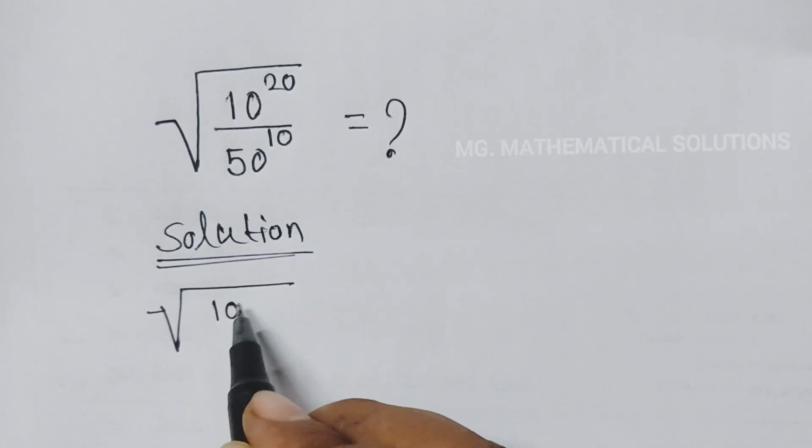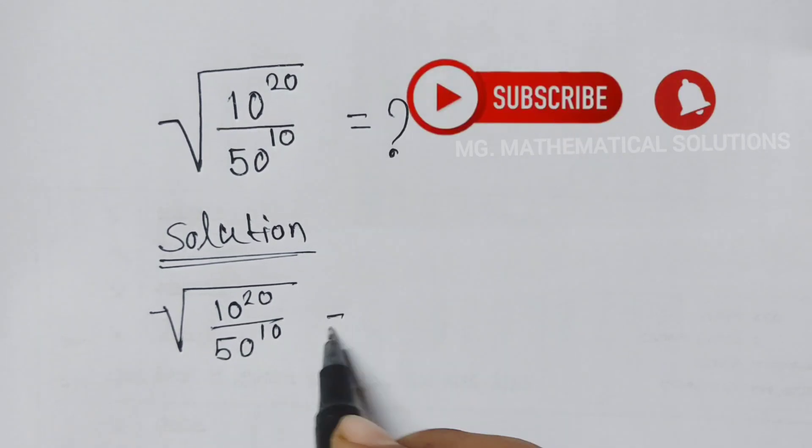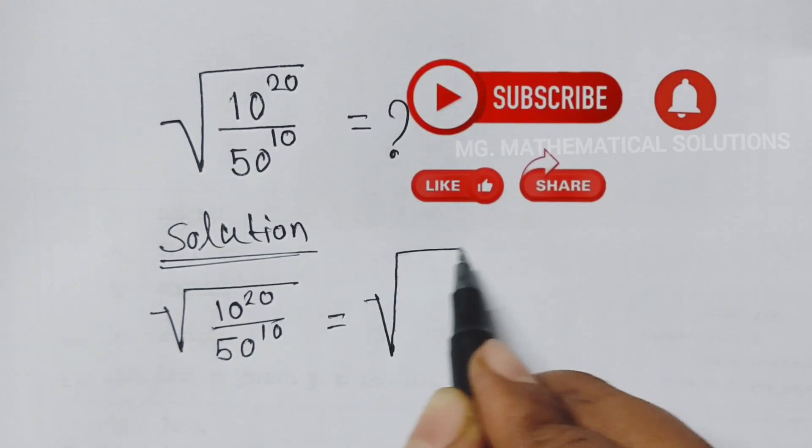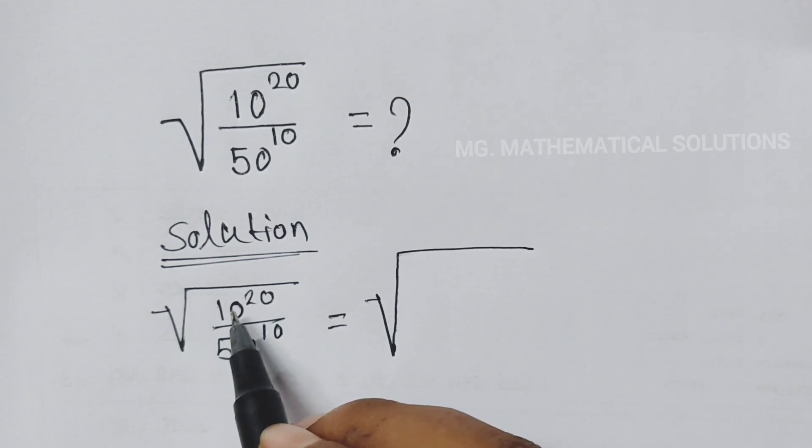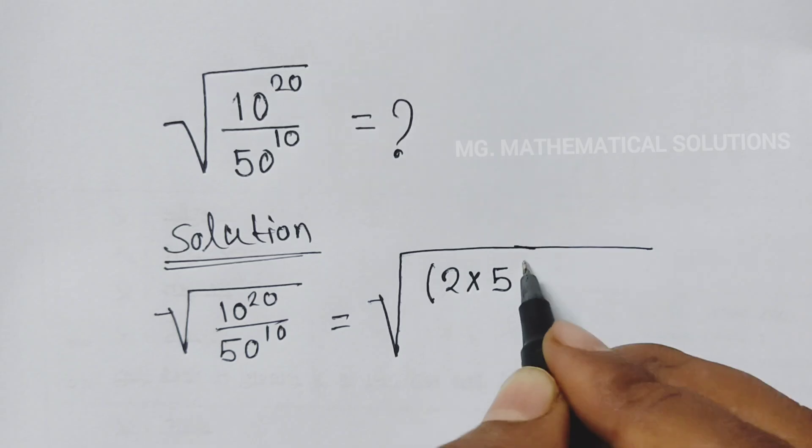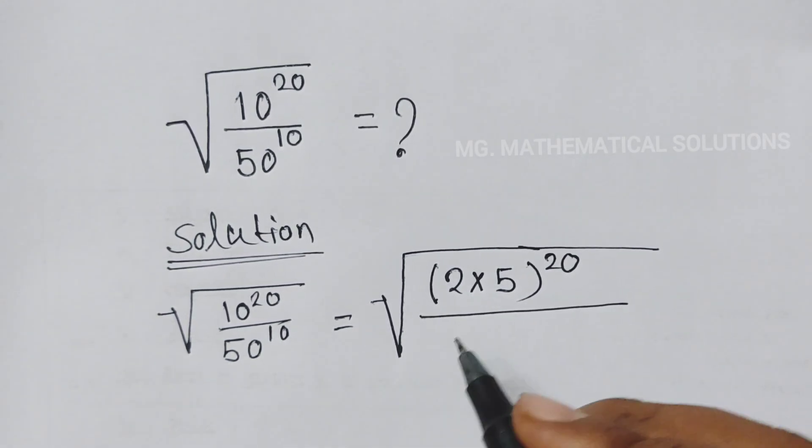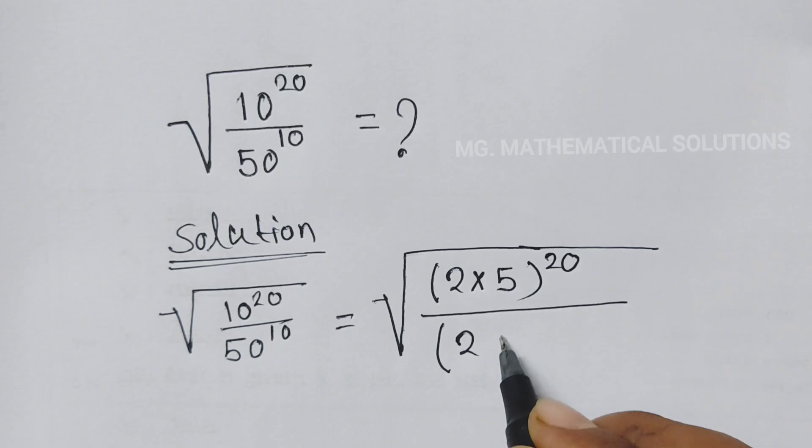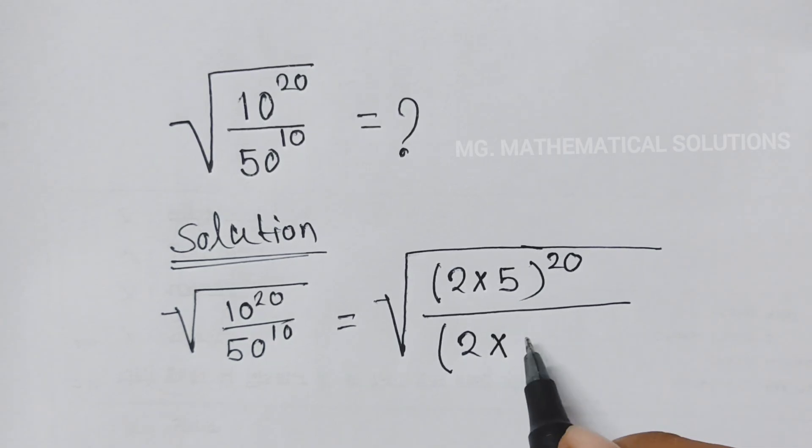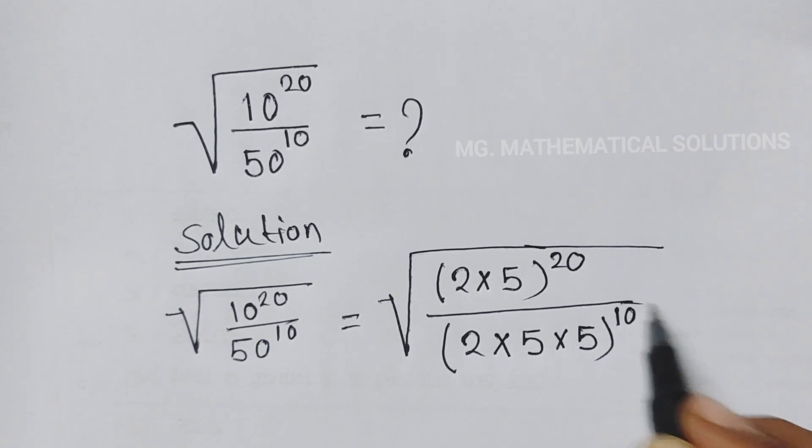Square root of 10 to the power 20 over 50 to the power 10. We can write 10 as 2 into 5 to the power 20, and 50 can be written as 2 into 5 into 5 to the power 10.